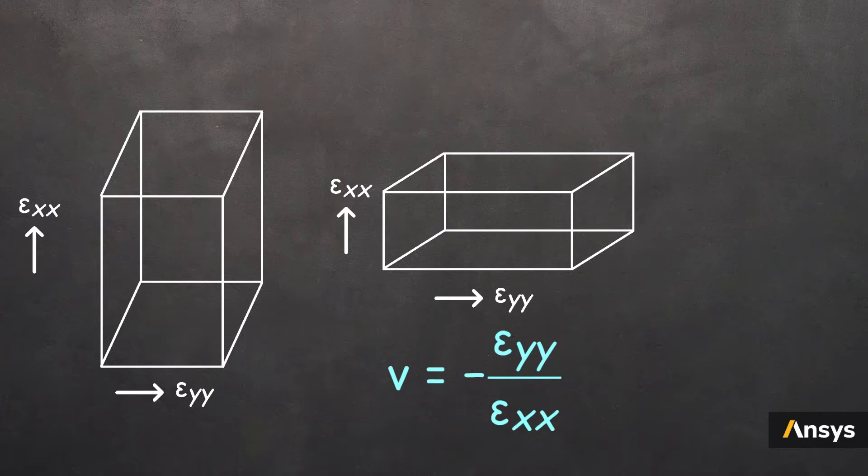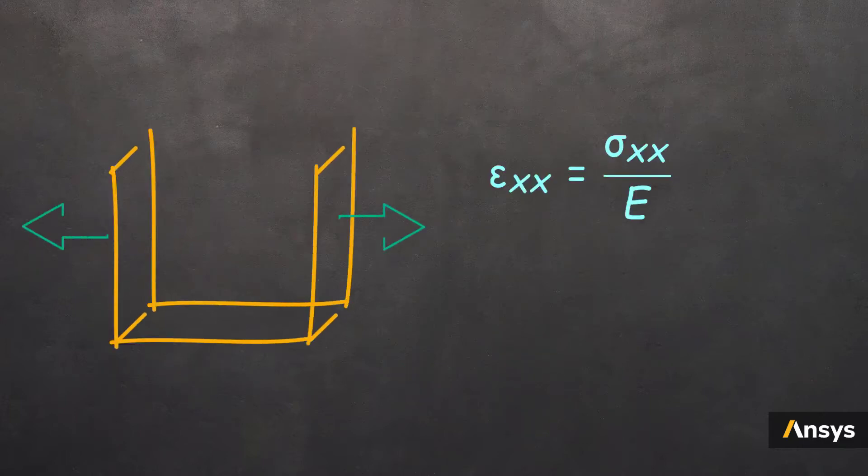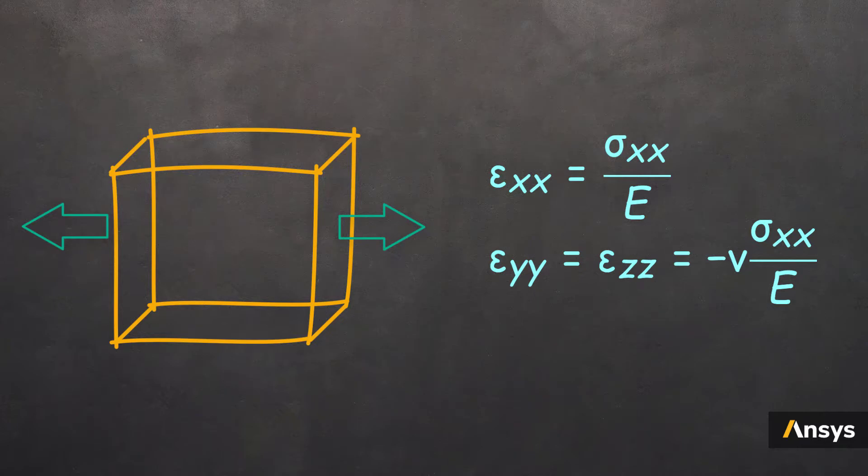This multiplying factor is nothing but the Poisson's ratio. Now using this relation, the strain developed in the y and z directions due to Poisson's effect is given by negative nu times sigma xx by E. Since this is predominantly uniaxial stress state, there are no shear strains developing in it and they are set to zero.